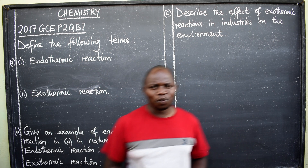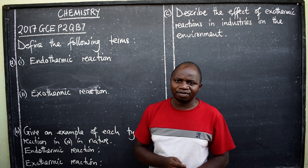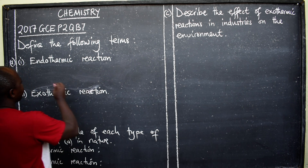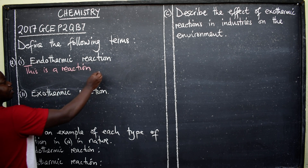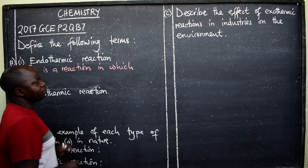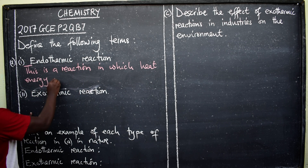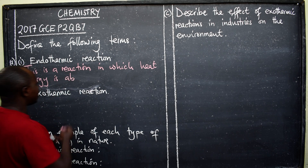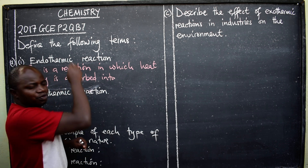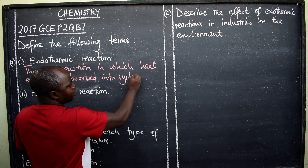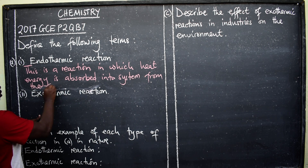We begin with defining endothermic reaction. When we say 'endo' we are talking about inside, and 'exo' means outside. So an endothermic reaction is a reaction in which heat energy is absorbed into the system from the surroundings.